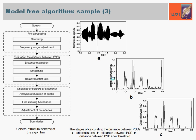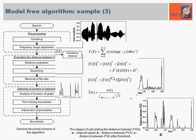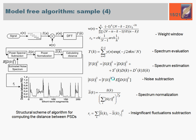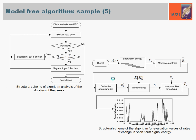On the next slide, it is possible to see the flowchart of the proposed algorithm for the speech segmentation task. It consists of three stages: pre-processing, evaluation of the distance between power spectral densities, and border detection. On the right, diagrams with analyzed curves are presented. The key idea of this algorithm is an analysis of distances between two normalized power spectral densities of adjacent short-term frames. Noise spectral subtraction is used for signal quality enhancement. After distance evaluation between power spectral densities is calculated, the algorithm for boundary detection is applied.